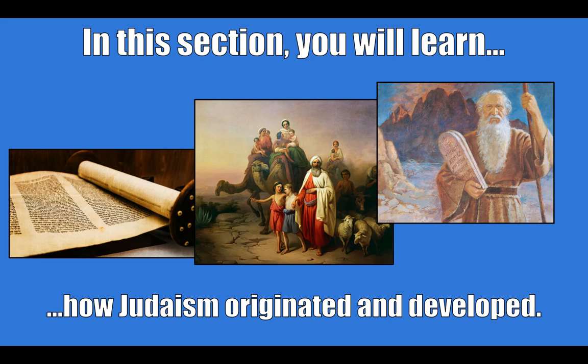In this section, you will learn how Judaism originated and developed. Judaism refers to the Jewish religion — the Jews, people that are Jewish, they practice Judaism. In a few pictures here, we have the Torah on the left, which is one of their sacred books. In the center, we have Abraham, who we will discuss, and he's shown with his family on a journey. And then on the right, this is Moses carrying the Ten Commandments that he received from Mount Sinai.